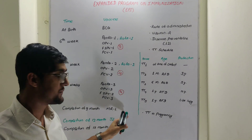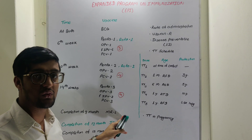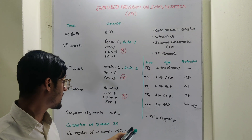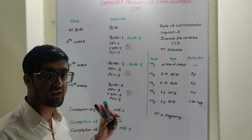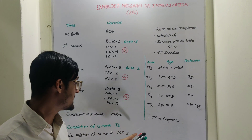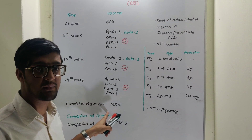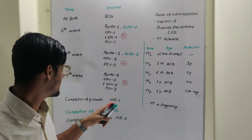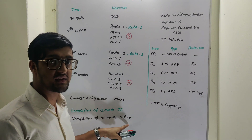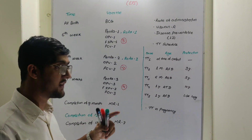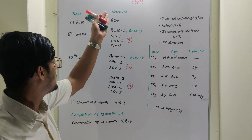After completion of nine months, MR vaccine first dose is given. After completion of 15 months, MR second dose is given. In between nine and fifteen months, at twelve months, there is another vaccine for Japanese Encephalitis. So: after completion of nine months, MR first dose; after completion of 15 months, MR second dose; and at twelve months, Japanese Encephalitis vaccine.